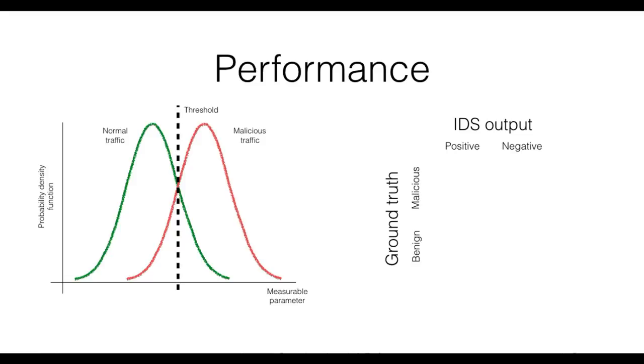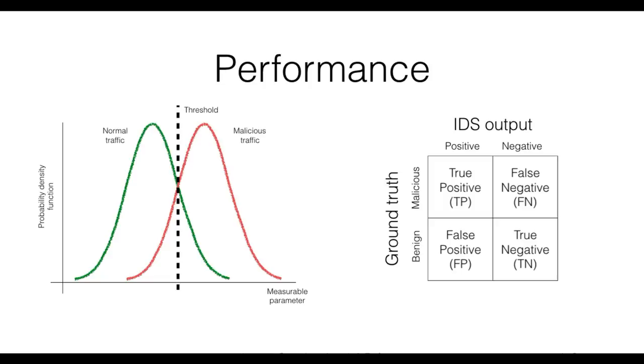If the ground truth and the IDS output are in agreement on the nature of a sample, we have a correct classification. If not, we have an error. This gives four possible outcomes. If malicious traffic is correctly classified as positive, we say this is a true positive sample. Similarly, if benign traffic is correctly classified as negative, this is a true negative sample.